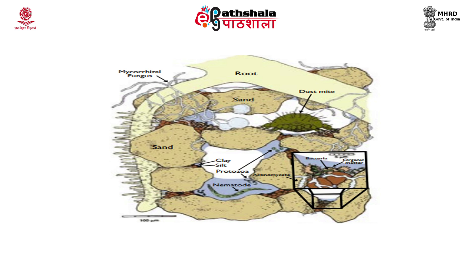Improving and maintaining existing mycorrhizal populations by increasing soil organic matter content, reducing tillage and other soil disturbance, and eliminating long fallow periods may work best for encouraging mycorrhizal symbiosis in agriculture.